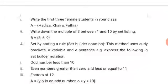Now number 4, set by stating a rule or we can say set builder notation. This method uses curly brackets, a variable and a sentence. For example, express the following in set builder notation.